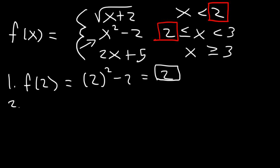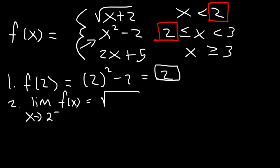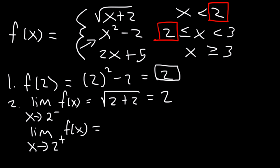Step 2: we need to show that the limit exists. First, find the limit as x approaches 2 from the left side. On the left side of 2, x is less than 2, so we use the square root function: the square root of 2 plus 2 is the square root of 4, which equals 2. Now check the right side: as x approaches 2 from the right, x is greater than 2, so we use x squared minus 2. That's 2 squared minus 2, which is also 2.